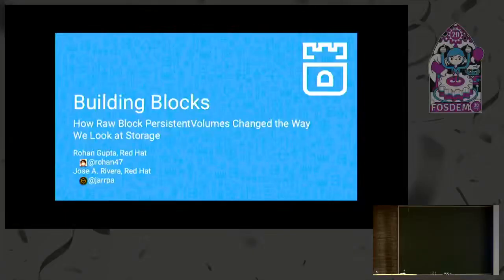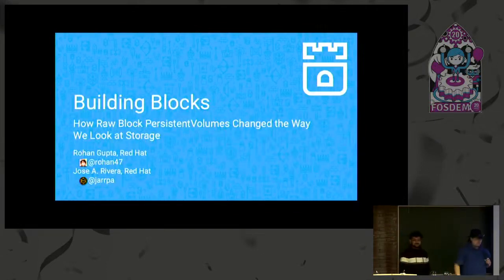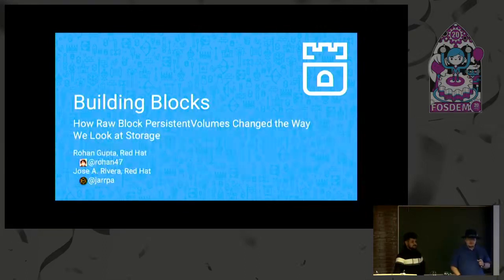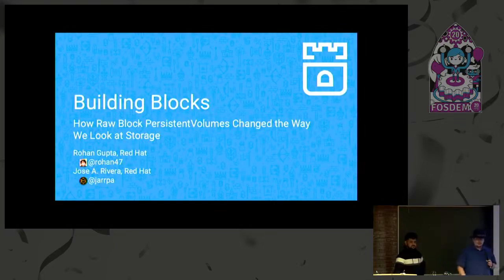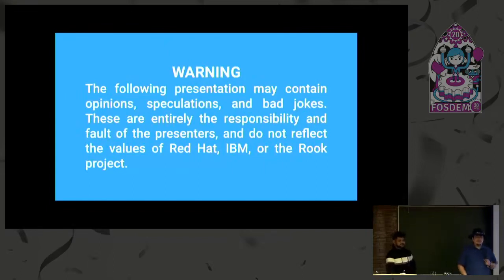Okay, everyone, please welcome Rohan and Jose for some more Kubinaitis fun. We're here to discuss a relatively new feature that just made it into Rook — about how Rook can now use persistent volumes to access its storage, rather than going through local hosts directly in Kubernetes. Fair warning: this may contain opinions, speculations, and bad jokes entirely our fault. Please do not blame Red Hat, IBM, or the Rook project.